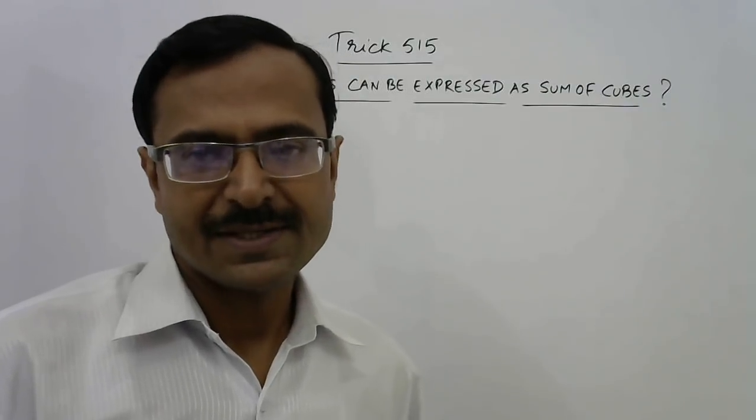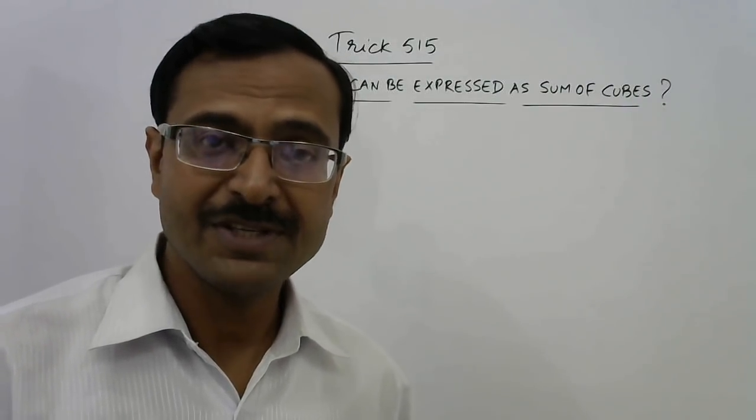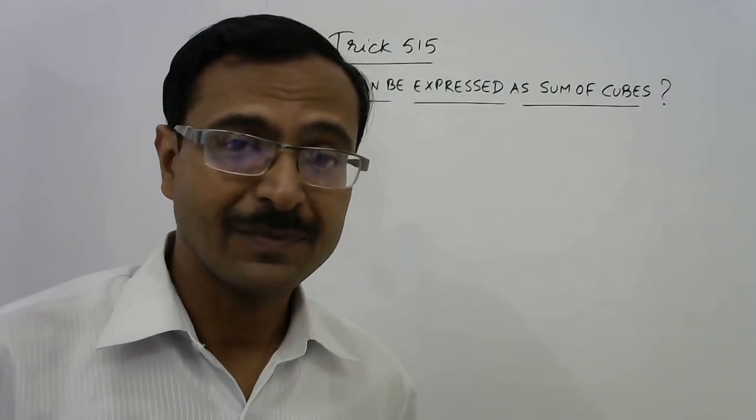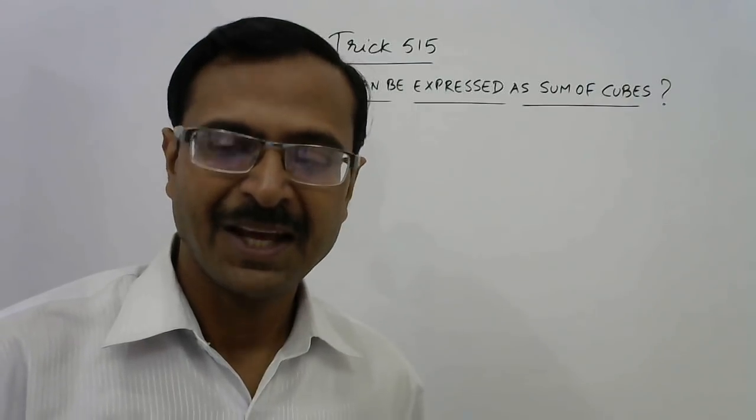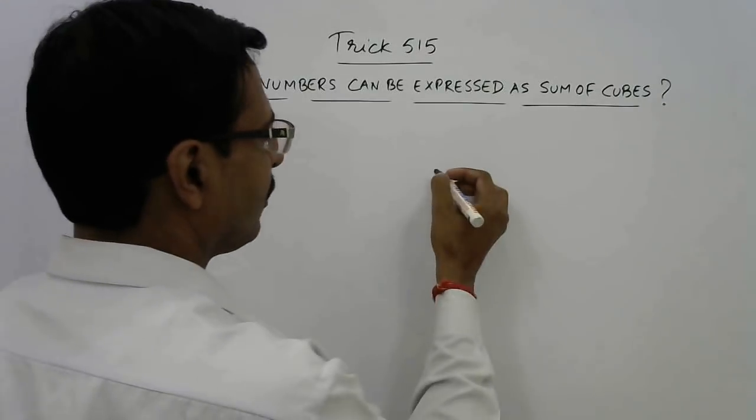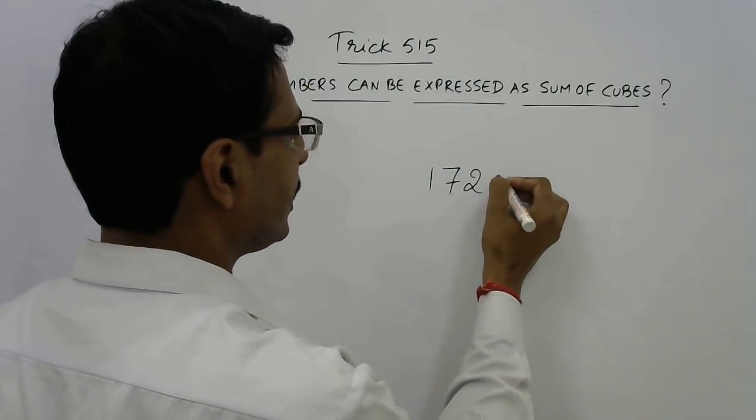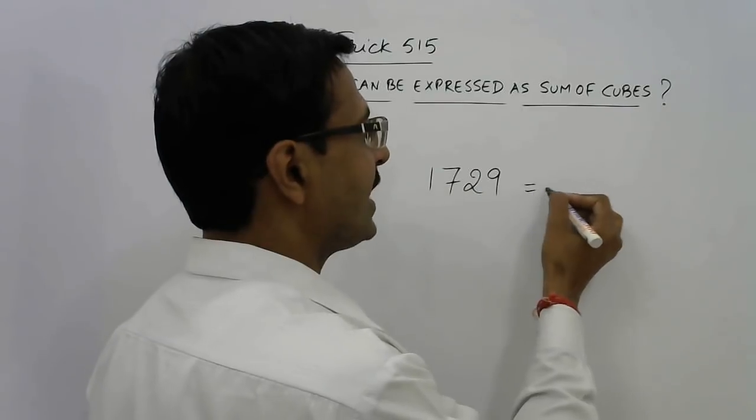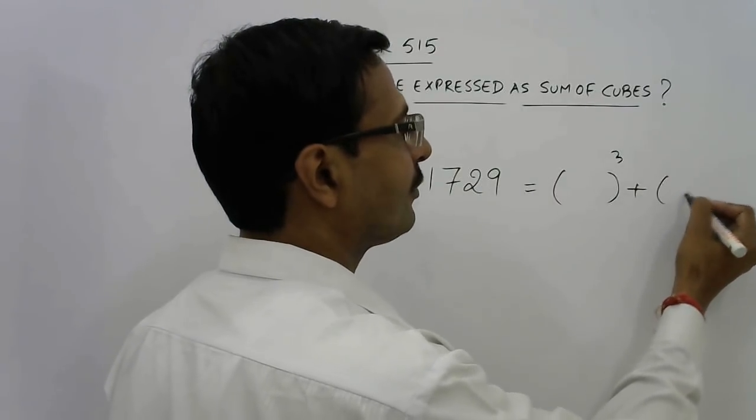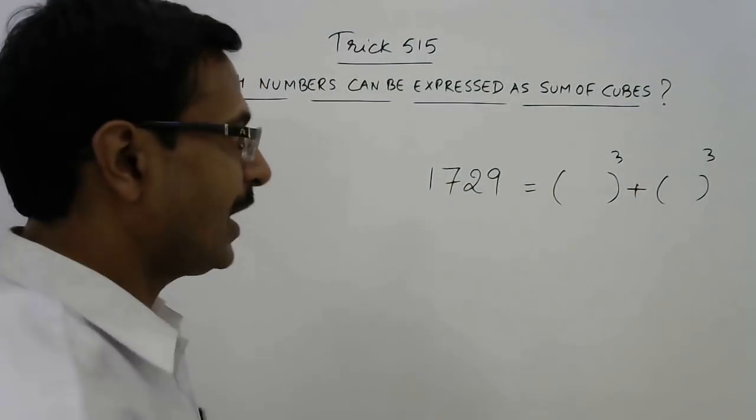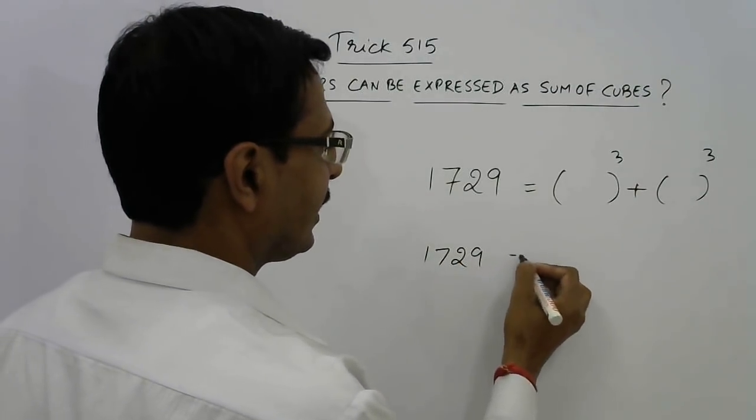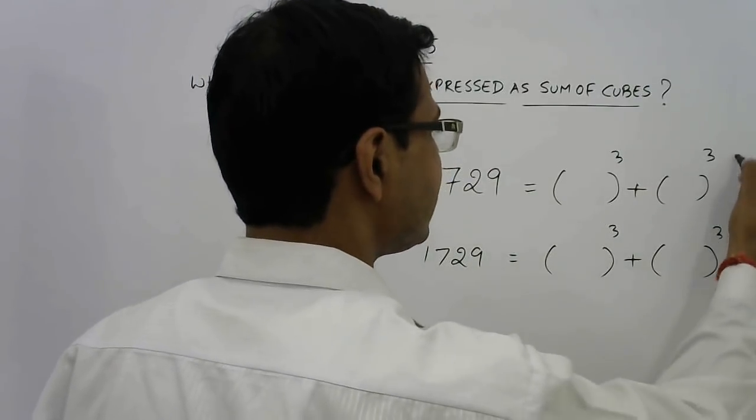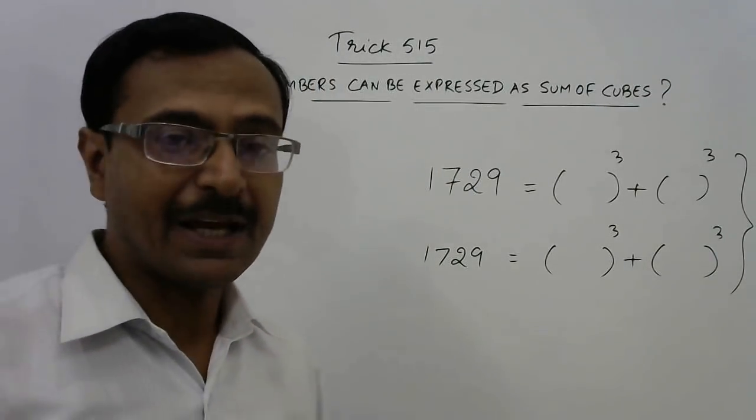He gave us numbers which can be expressed as a sum of cubes of two natural numbers, that too in two ways. The first number he gave was 1729. Now this number 1729 can be expressed as a sum of cubes of two numbers, and the same number 1729 can be expressed as a sum of cubes of two different numbers. That is, in two ways it can be expressed as sum of cubes.